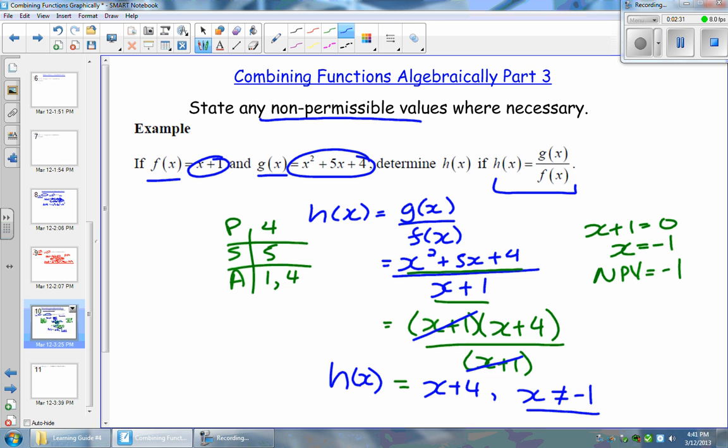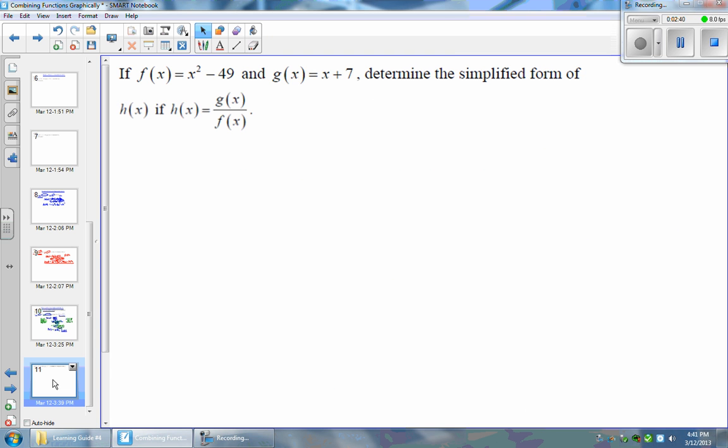x plus 4 where x cannot be equal to negative 1 because that's a non-permissible value there. So just be aware that when you are dividing functions, you may have some non-permissible values. And so it's really important to state those. Let's take a look at one more example here where you're dividing.